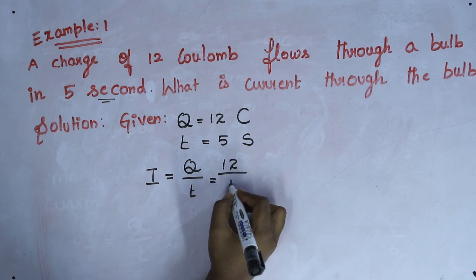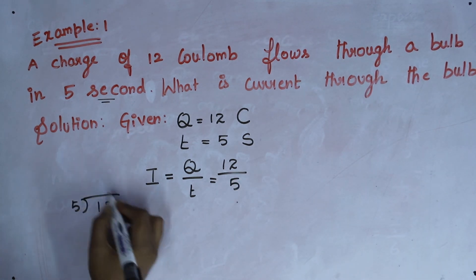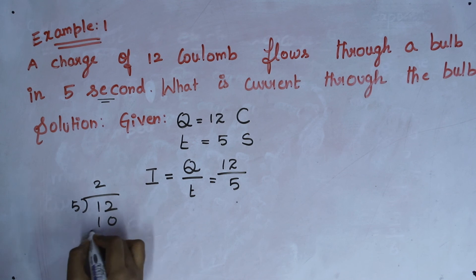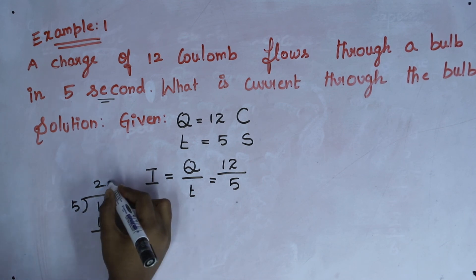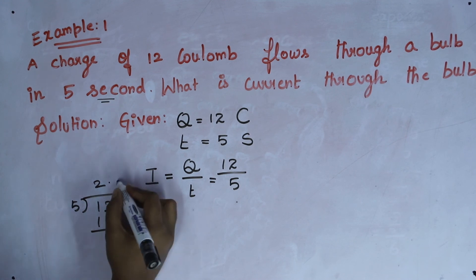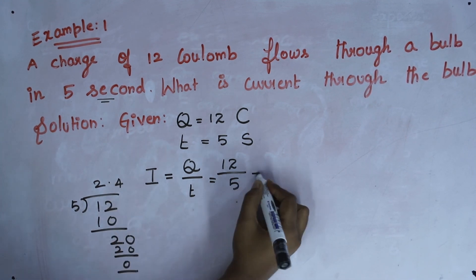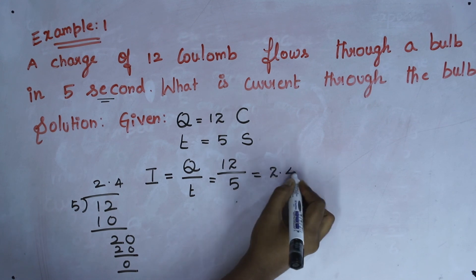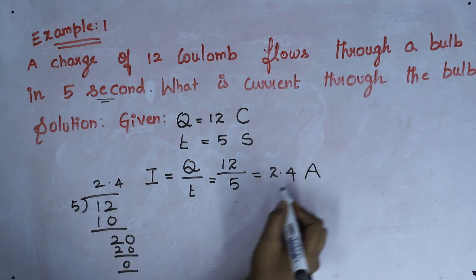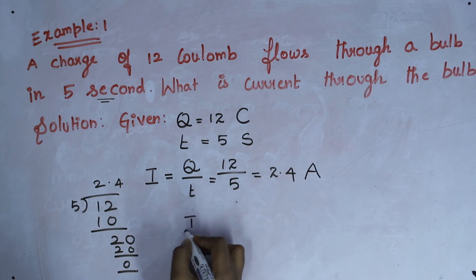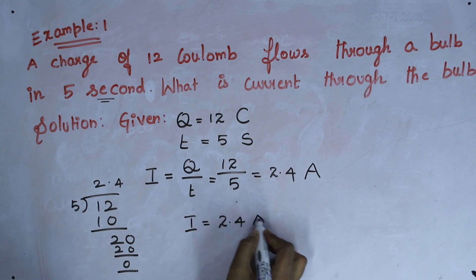Substituting: I = 12 / 5. Dividing gives 2.4. So the current is equal to 2.4 ampere. In physics, you should not forget to write the units — the current through the bulb is 2.4 A.